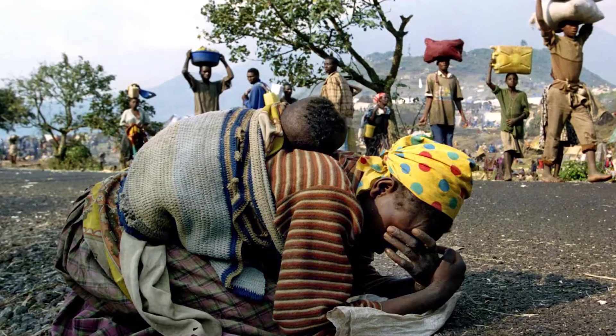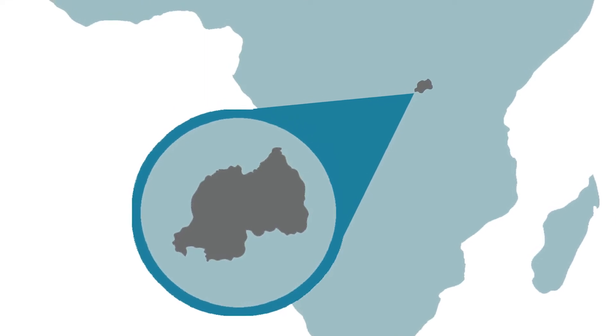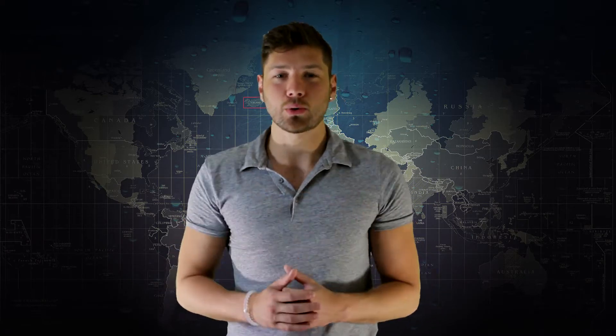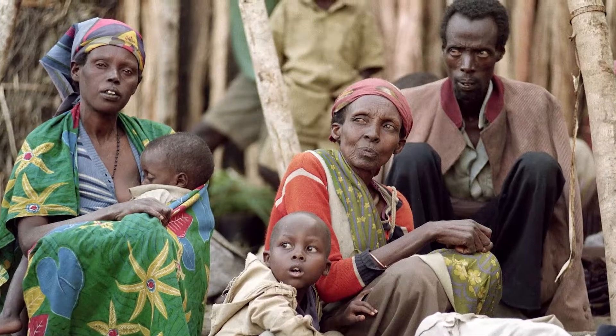The Rwandan Genocide started on April 6, 1994 in Rwanda, Africa. Lasting only 100 days, about 800,000 people were killed, making this one of the fastest genocides in history. The genocide was caused by a division between two ethnic groups in Rwanda, the Tutsis and the Hutus. The targets of the genocide were mainly Tutsis and non-extremist Hutus.